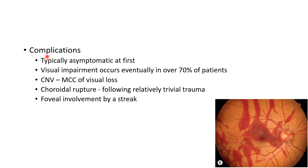Coming to the complications of angioid streaks: patients with angioid streaks are typically asymptomatic at first. However, visual impairment occurs eventually in over 70% of patients. The most common cause of visual loss in patients with angioid streaks is choroidal neovascularization.